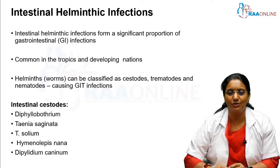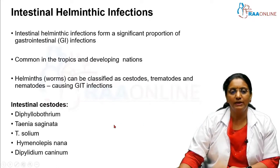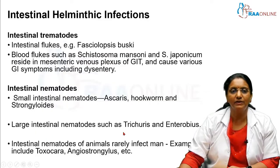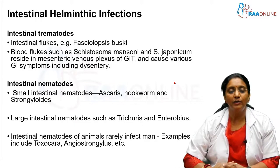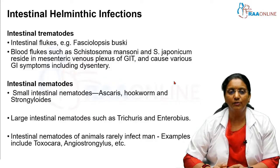The tapeworms which cause infection in the gastrointestinal tract are Diphyllobothrium, Taenia saginata, Taenia solium, Hymenolepis nana, and Dipylidium caninum. Today we are going to talk only about Taenia saginata and solium. Another group of worms are the trematodes. Just like cestodes are tapeworms, trematodes are also flat worms but they are leaf-shaped, not segmented, and are called flukes. The one occurring in the intestine is Fasciolopsis buski, which is an intestinal fluke.